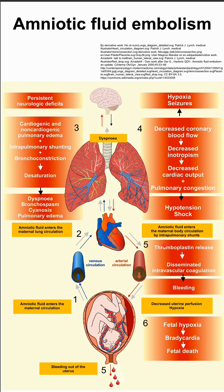The amniotic fluid then enters the maternal body circulation, going into the arteries of the mom. You can have a DIC picture with bleeding, and eventually it can inhibit blood flow to the uterus, decrease uterine perfusion, cause hypoxia, which can then affect the baby. It oftentimes presents with bleeding out of the uterus as well.